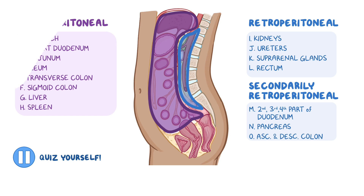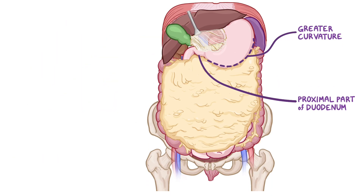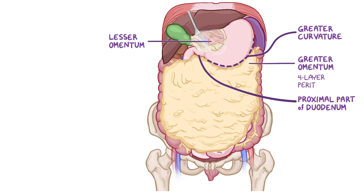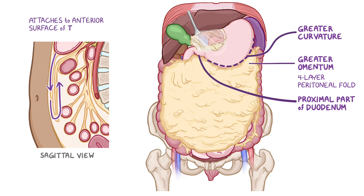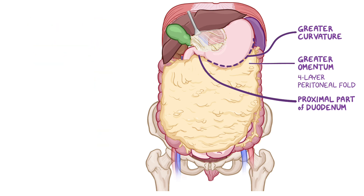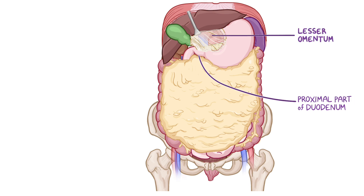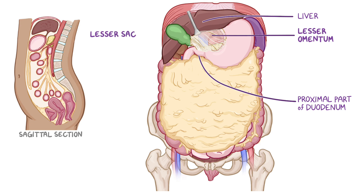Now we are going to look at some of the peritoneal structures in adults. Let's first start by looking at the omentum, which is a fold of peritoneum. There are two of them: the greater omentum and the lesser omentum. The greater omentum is a four-layered peritoneal fold that hangs like an apron from the greater curvature of the stomach and the proximal part of the duodenum. After descending, it folds back and attaches to the anterior surface of the transverse colon and its mesentery, and these four layers fuse with one another. The lesser omentum is a double-layered peritoneal fold that connects the lesser curvature of the stomach and the proximal part of the duodenum to the liver. Posterior to the lesser omentum, there's a space known as the lesser sac or omental bursa, and the rest of the peritoneal cavity is known as the greater sac.